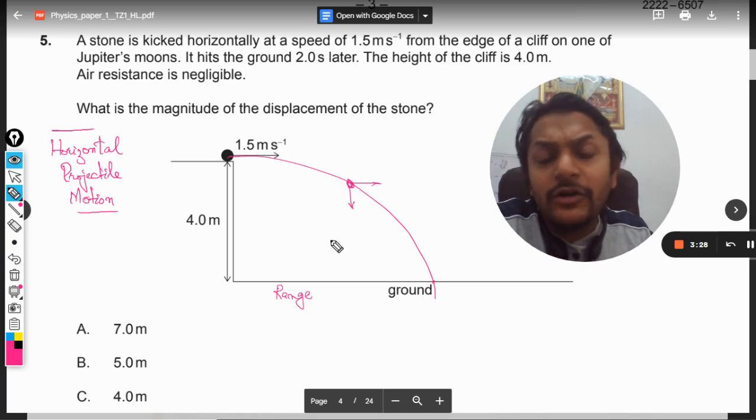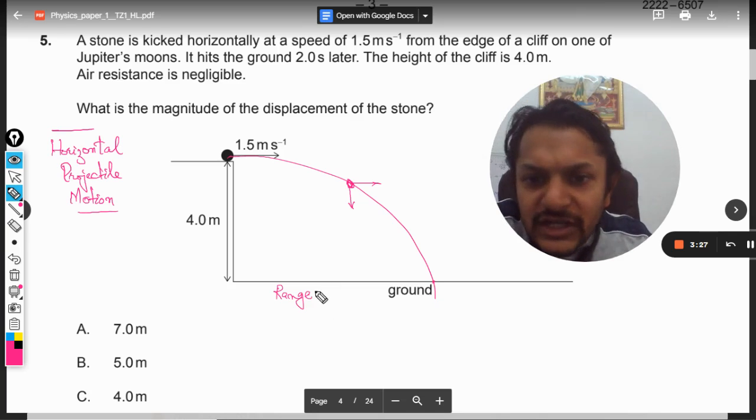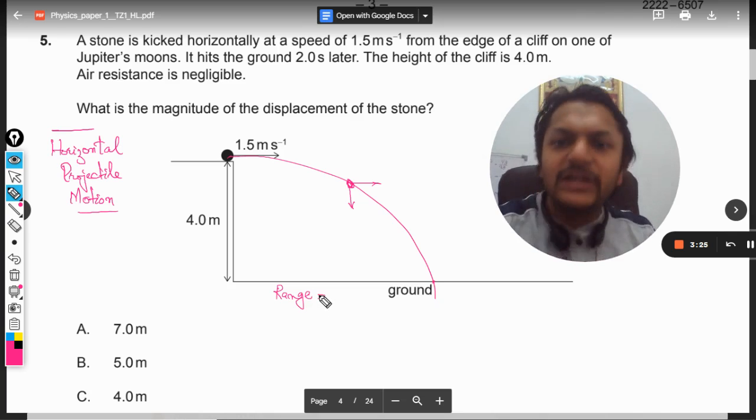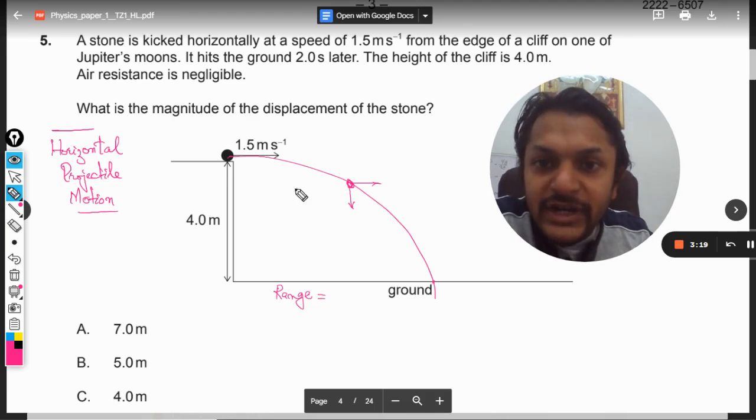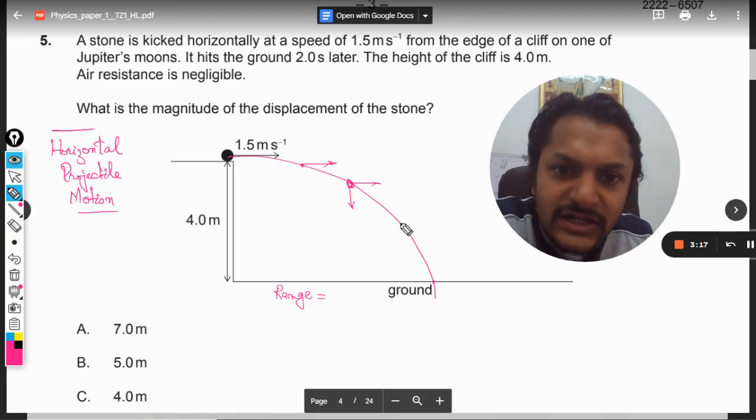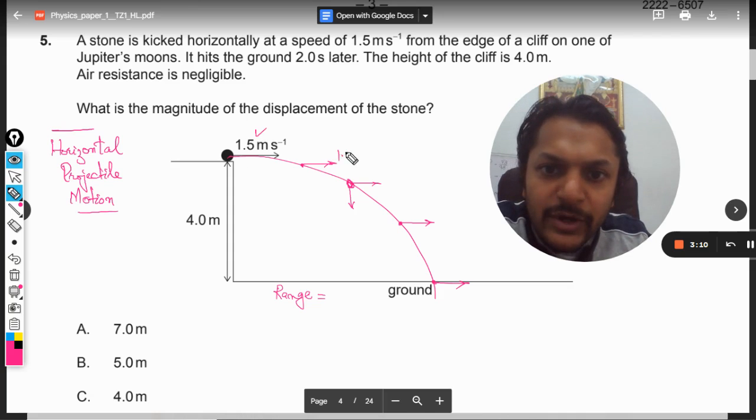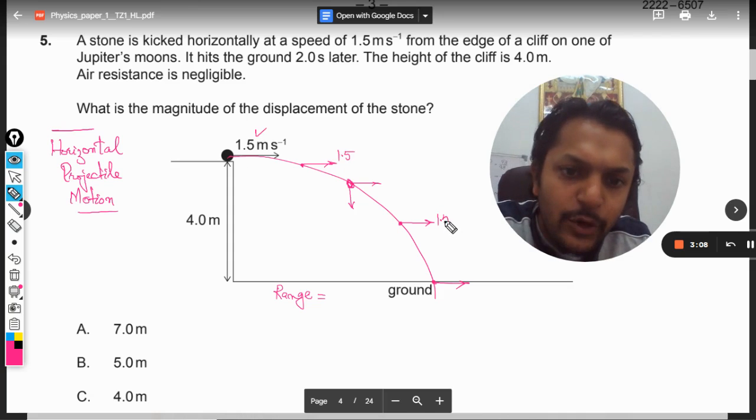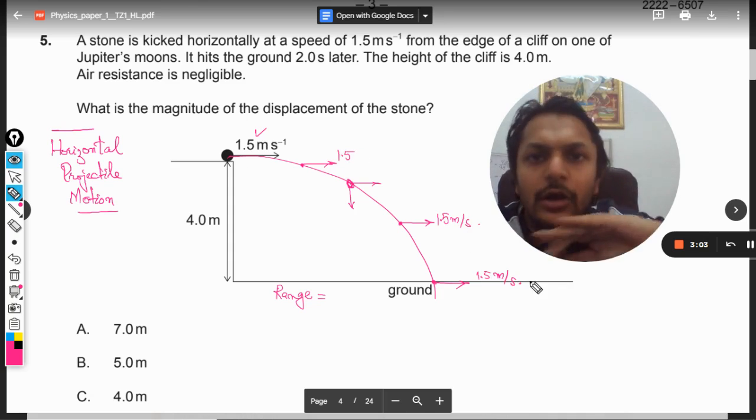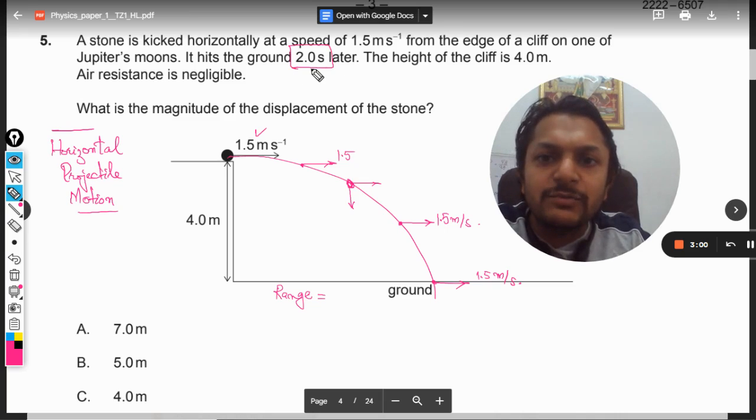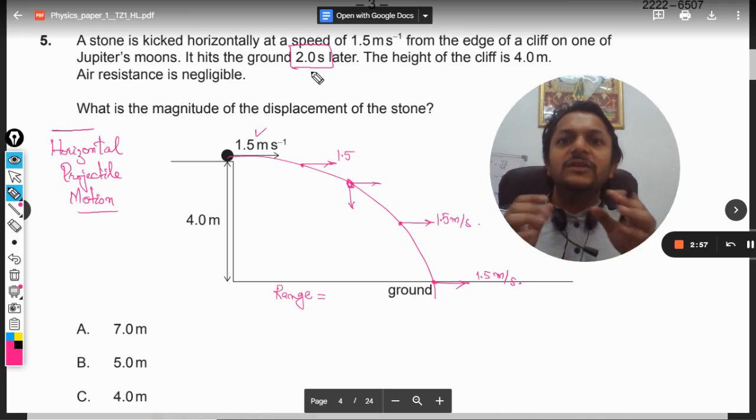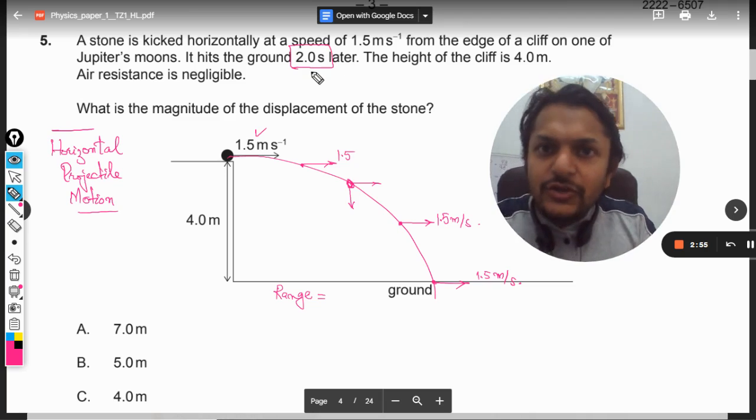We need to find the range, and the only characteristic we're going to utilize is that in the case of horizontal projectile motion, the horizontal velocity does not change. It was moving with 1.5, it will keep moving with 1.5 meters per second for all of the time. For how much time? For two seconds, because after two seconds the body is touching the ground.